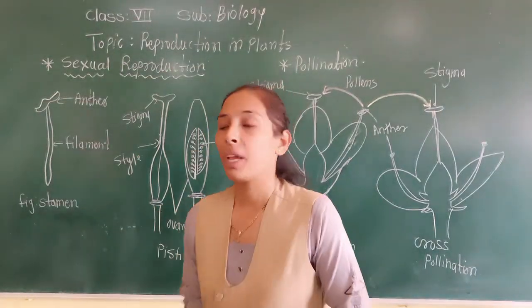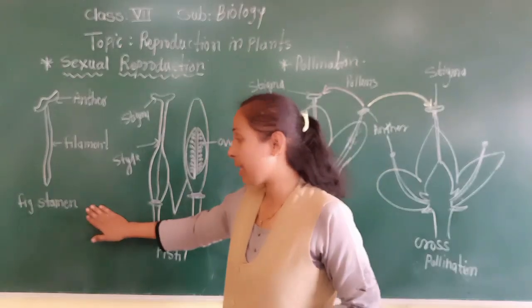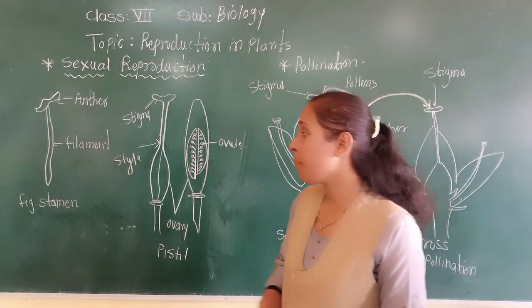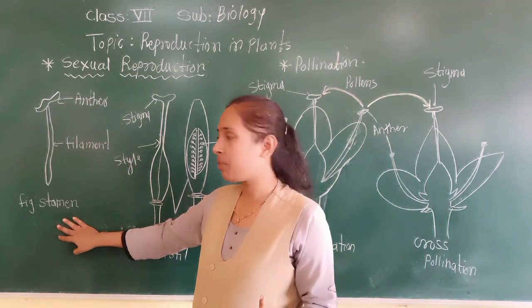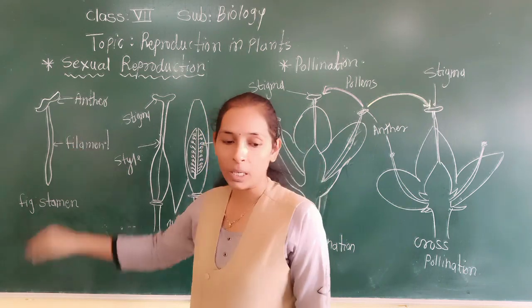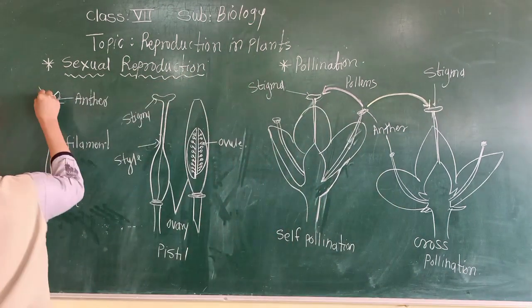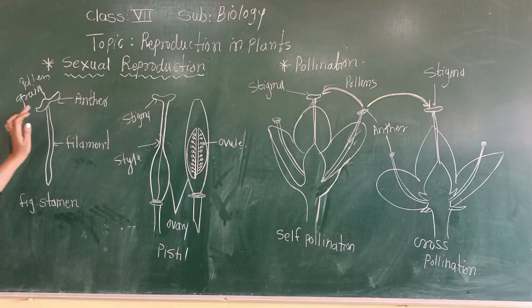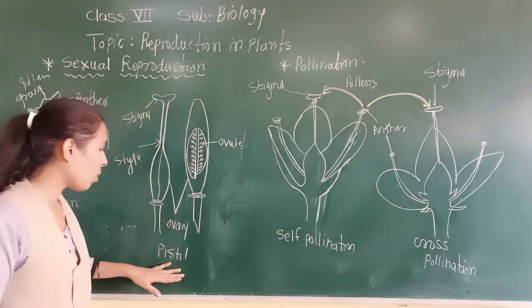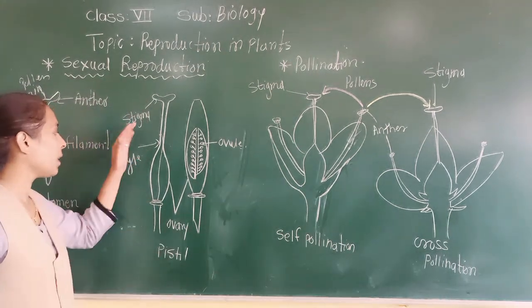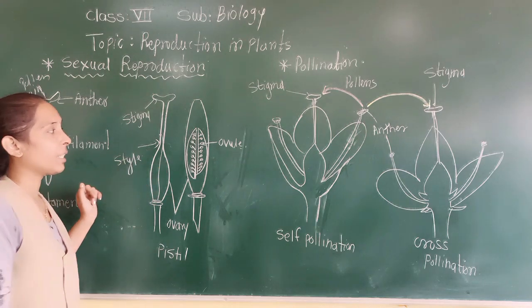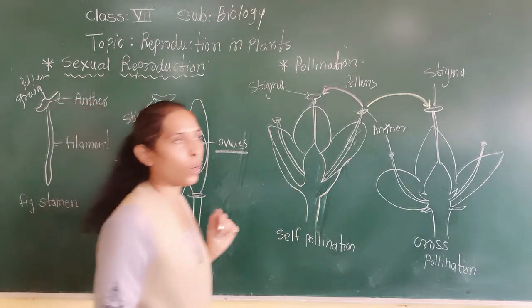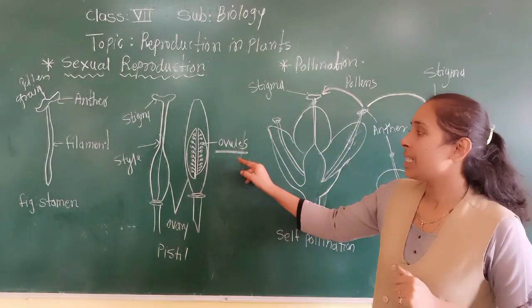So now we have discussed about the stamen, which is the male reproductive part of a flower, and the pistil, which is the female reproductive part. The stamen contains the male sex gamete — pollen grain. The pistil is made up of stigma, style, and ovary. And the ovary contains inside it the granule-like structures called ovules, which are the female sex gamete.